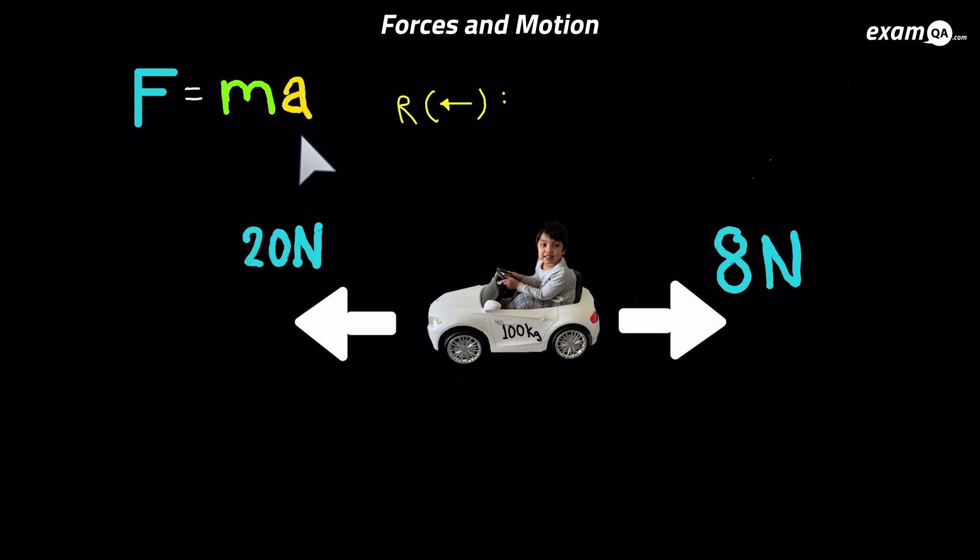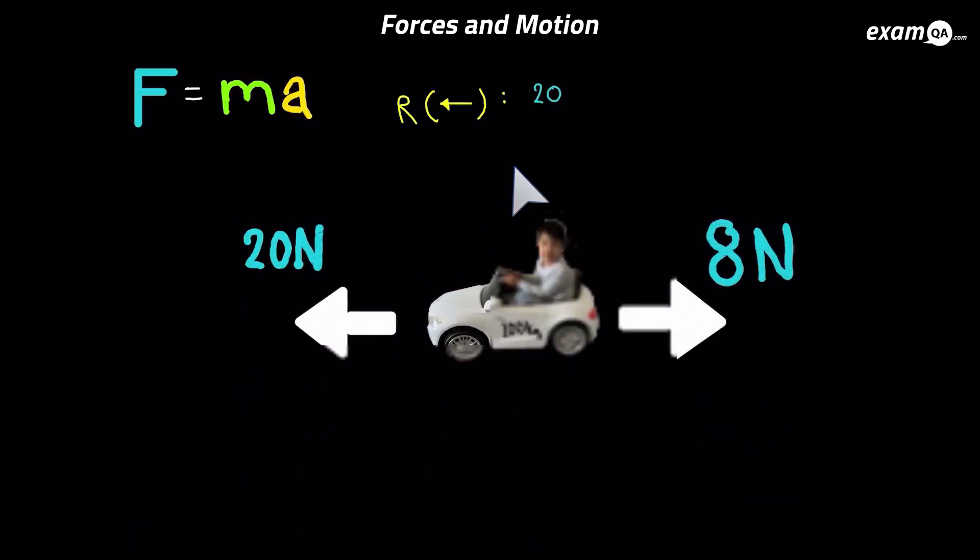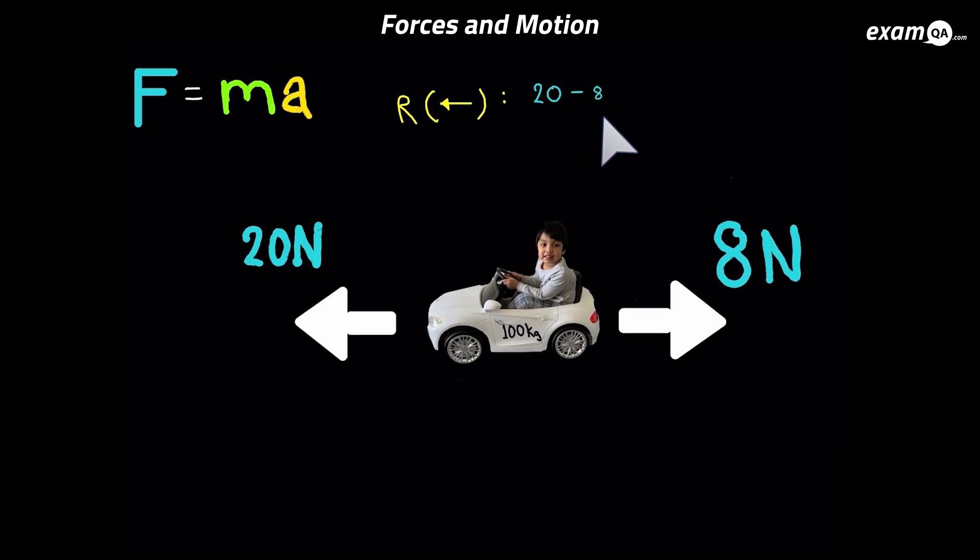Okay, so we wrote that R for resolving, just to show the examiner we're going to resolve the forces. Now, if you're thinking which direction do we put as positive, my rule is I just put the direction it's initially moving in as positive. We can clearly see that it's going to be moving to the left, so I just chose that as my positive direction. Okay, so let's put those forces on. We've got the 20 Newtons, and that's positive. And the 8 Newtons is negative.